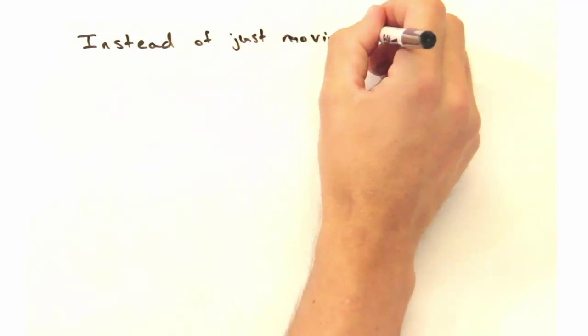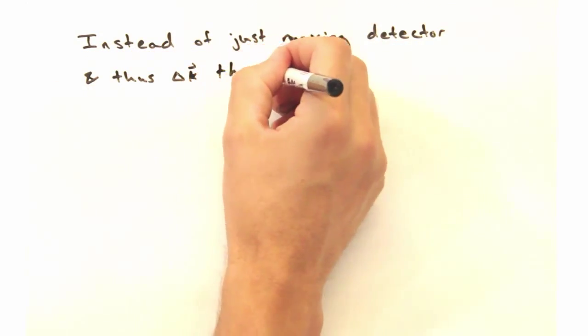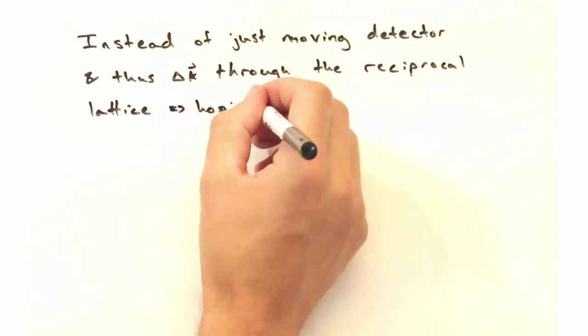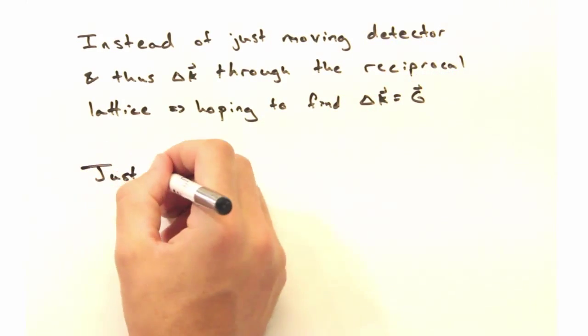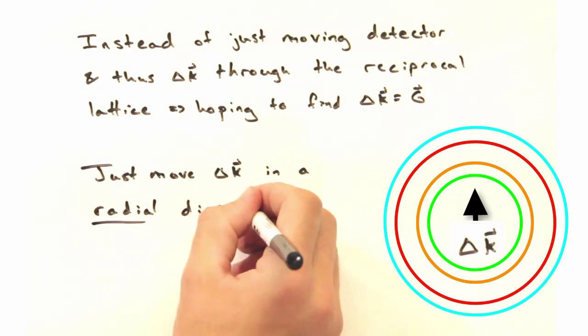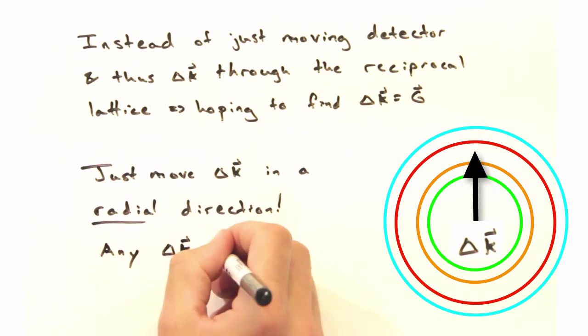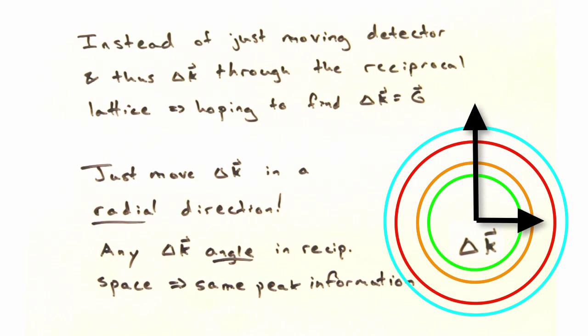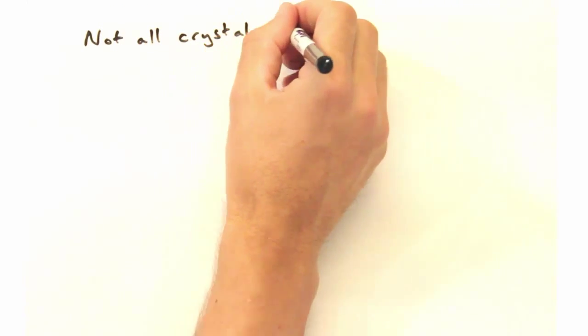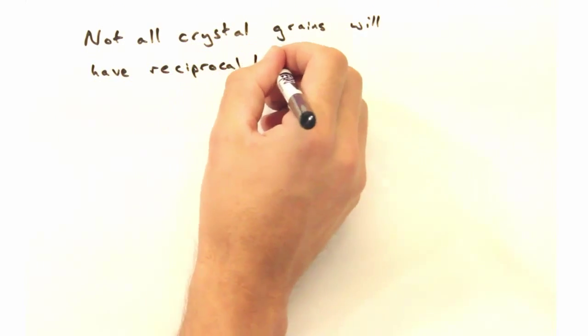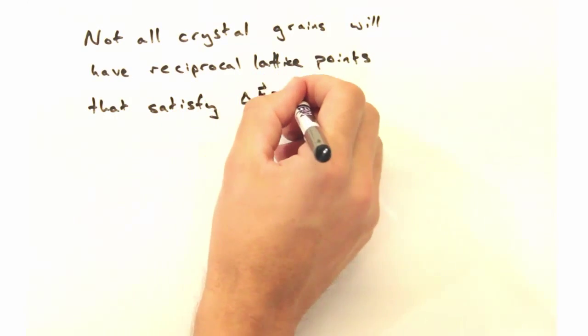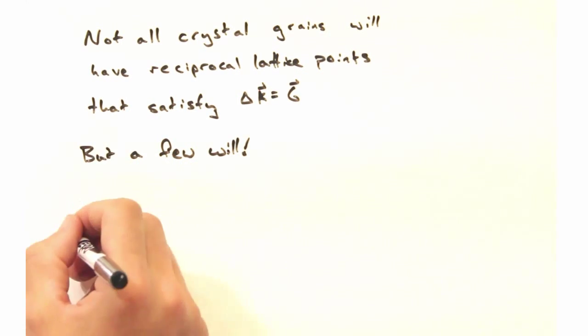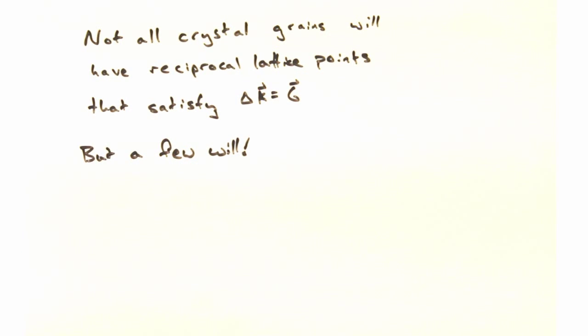So instead of moving the detector, and thus delta k, through the reciprocal lattice, hoping to find a delta k equals g condition, all we need to do is move delta k in a radial direction, since at any angle we should get the same peak information. And while not all of the crystal grains will have reciprocal lattice points at some particular point along the sphere, some grain will, and that's enough to give us constructive interference.